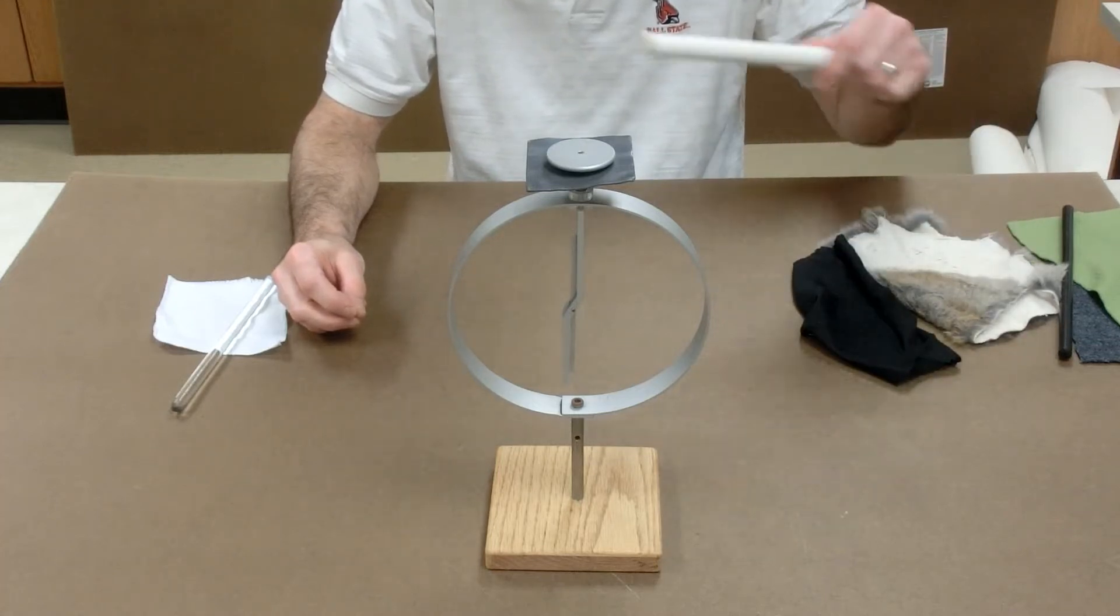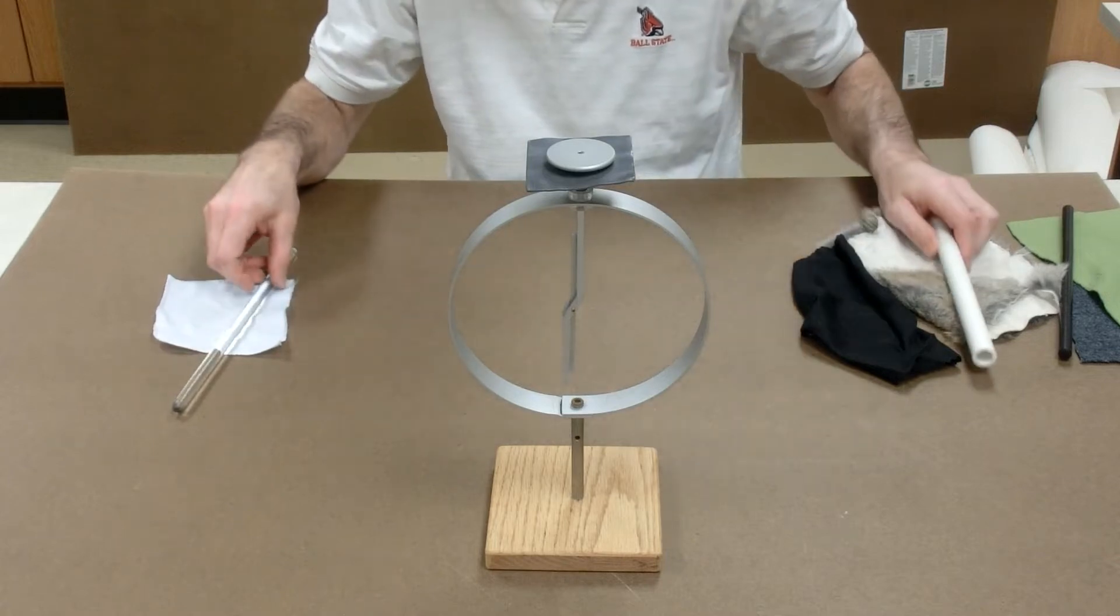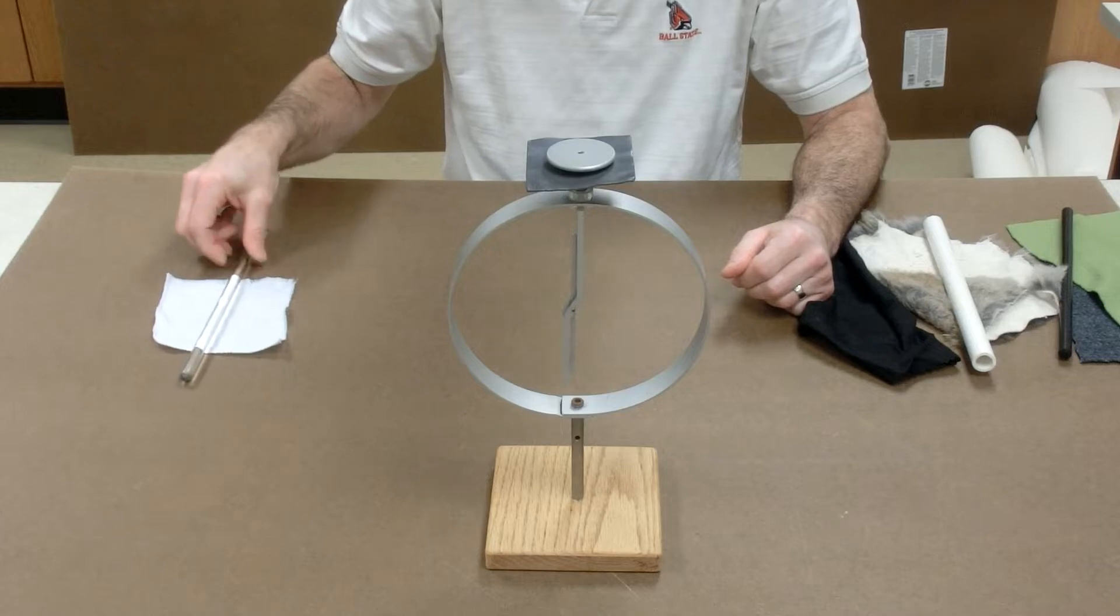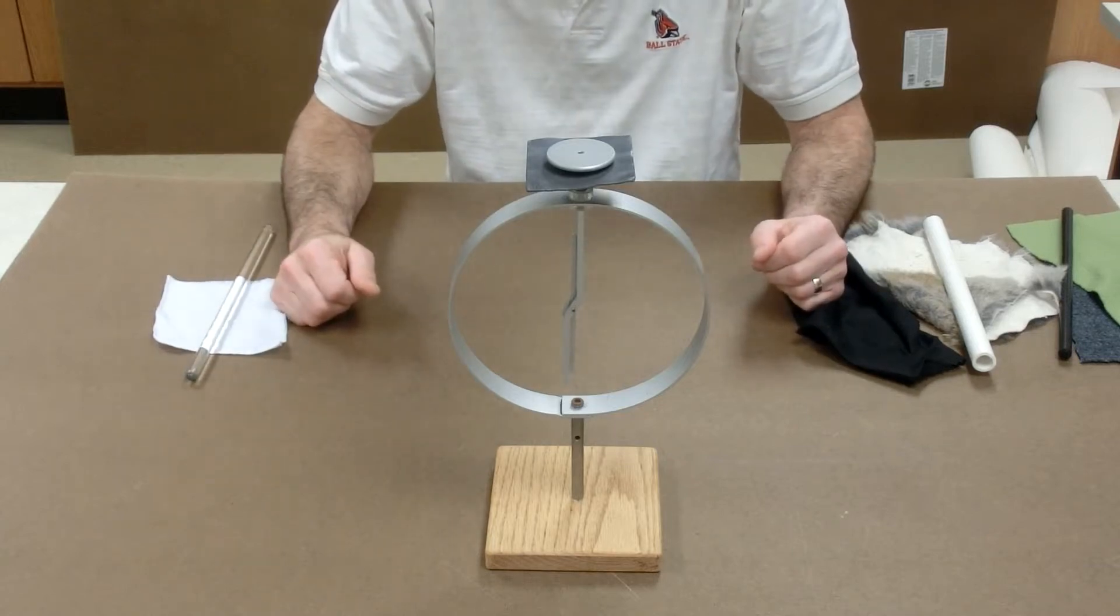Touching it with a negative would make the electroscope negative. Touching it with a positive would pull electrons out and make it positive. There's a second method of charging called induction.